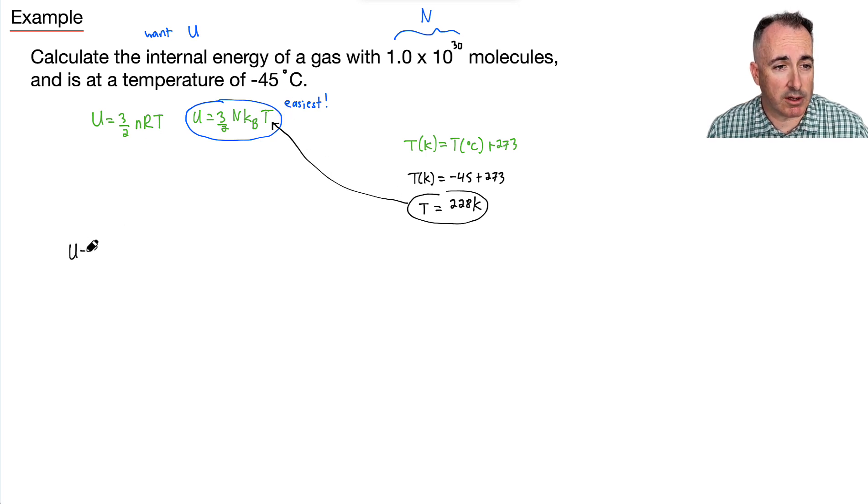Well, that means then I can put it all together. I have U equals 3 halves. Now, what's capital N? It's 1 times 10 to the 30. We're told that from the beginning here. What's Boltzmann's constant? It's 1.38 times 10 to the minus 23. That you can look up. And then the temperature now we use is 228 Kelvin that we just found. And we can do this on the calculator.